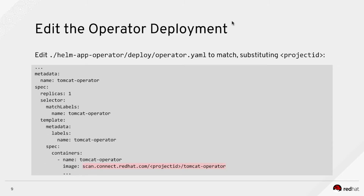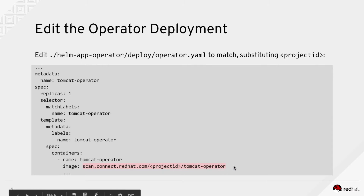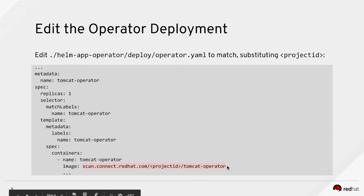Continuing with the operator deployment — this is the Kubernetes manifest where we actually deploy the operator image into OpenShift or Kubernetes MiniShift. The file is in the helm-app-operator subdirectory under the deploy folder: operator.yaml. You'll need to substitute your project ID under the spec.containers.image field, replacing the placeholder with scan.connect.redhat.com/your-project-identifier/tomcat-operator:0.1.0.